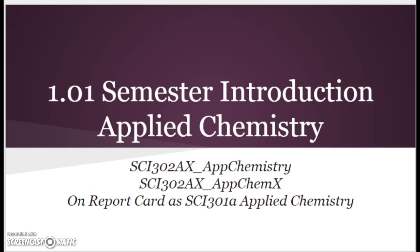So this is our 1.01 semester introduction for applied chemistry. At MNBA, we teach six different levels of chemistry. So if your teacher asks you which chemistry class you're in, you are in applied chemistry. And just because it takes us a few weeks to get to know everyone, you'll see when you log into your classes that it's Psi 302AX, AMP Chemistry, for applied chemistry. On your report card, it's going to say Psi 301A, Applied Chemistry.